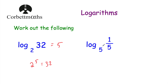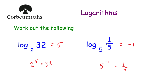This time we've got log to base 5 of one fifth. These ones are a bit different. We need to think: what power would you raise 5 by to get to one fifth? Thinking back to your negative indices, that would be negative 1 — 5 to the power of negative 1 is 1 over 5, or one fifth. So log to base 5 of one fifth is equal to negative 1. Think back to your negative indices.